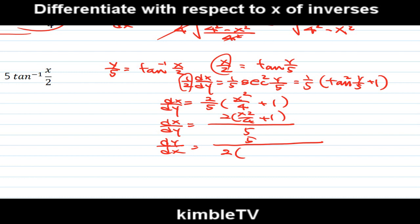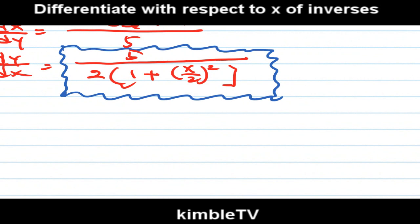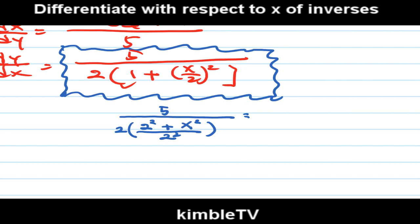dx/dy equals 2/5[x²/4 + 1]. Reciprocal: dy/dx equals 5/[2(x²/4 + 1)].